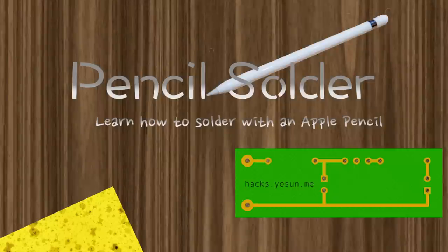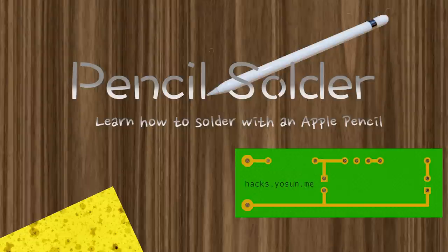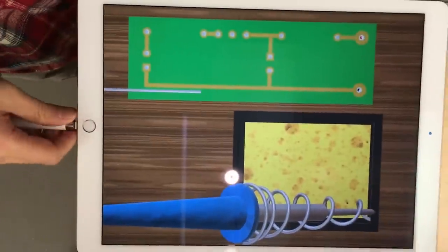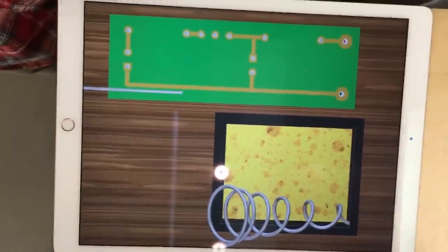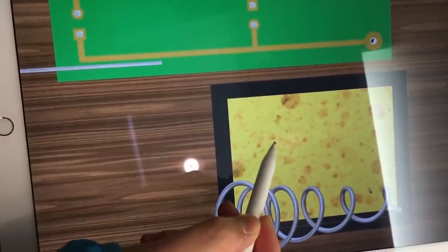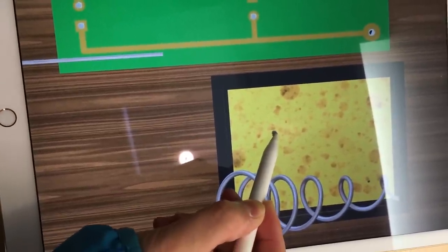Pencil Solder turns your Apple Pencil into a soldering iron. Unplug your Apple Pencil from its lightning charging port, and you've just turned it into a soldering iron.